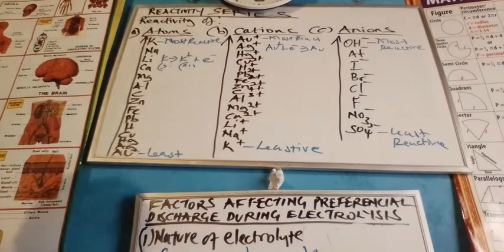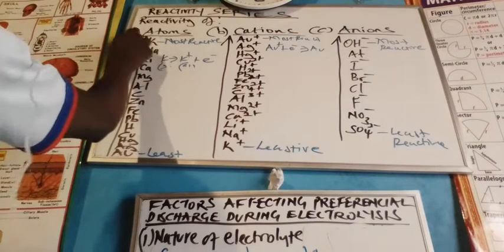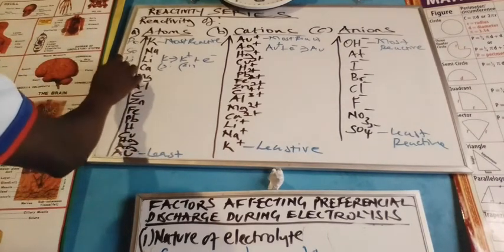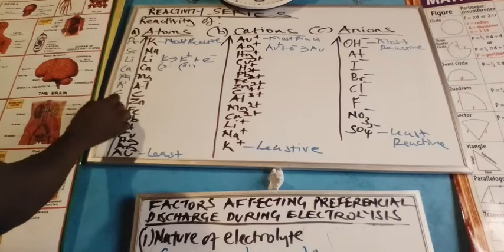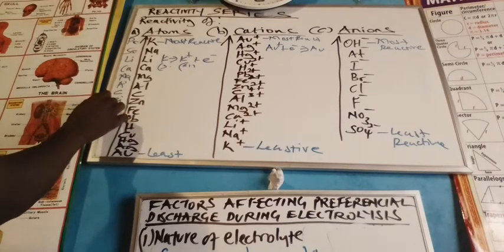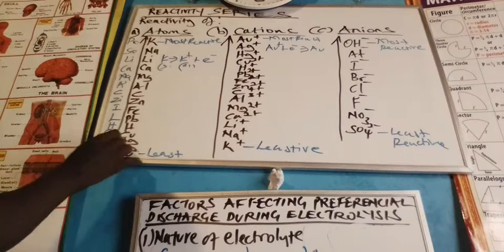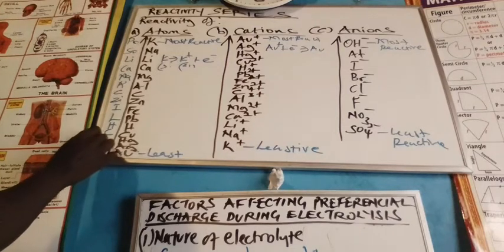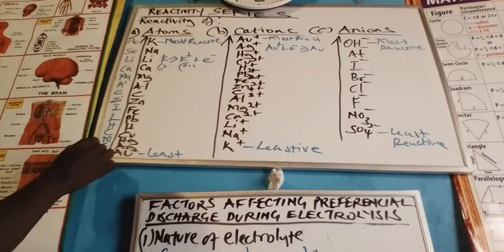How do you recall this order? When you want to recall the order of reactivity of atoms, you represent them with acronyms using the first two letters of each name. For potassium: Po; sodium: So; lithium: Li; calcium: Ca; magnesium: Ma; aluminium: Al; carbon: C; zinc: Z; iron: I; lead: L; hydrogen: H; copper: Cu; mercury: Me; silver: Ag; and gold: Go.